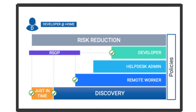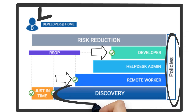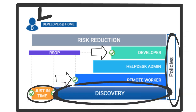Matching criteria for policies is cumulative, which allows you to combine conditions and groups in a single policy or across different policies. In this example, we have a developer connecting in from home. We assign the tailored developer policy based on group membership, and in addition, any remote worker rules that we may want to enforce while the user is not in the office, which we can establish based on conditions — all within the confines of our risk reduction policies, while still providing a flexible discovery and exception handling mechanism that allows us to deal with the unexpected.